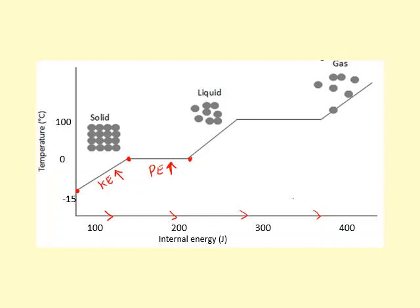And then once it's melted into a liquid, you carry on heating. And now you can see, once again, the temperature is increasing. That's because the kinetic energy of the particles is increasing. They're moving faster, so higher temperature.